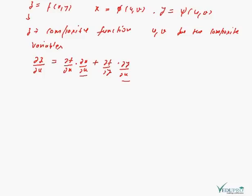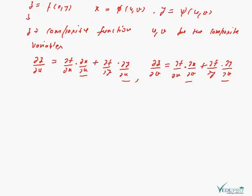Composite variables will be visible here. Similarly, we can also calculate ∂z/∂v, and the formula for that will be: ∂f/∂x · ∂x/∂v + ∂f/∂y · ∂y/∂v. So we have two formulae for the composite function z, taking the partial differentiation with respect to composite variables u and v.